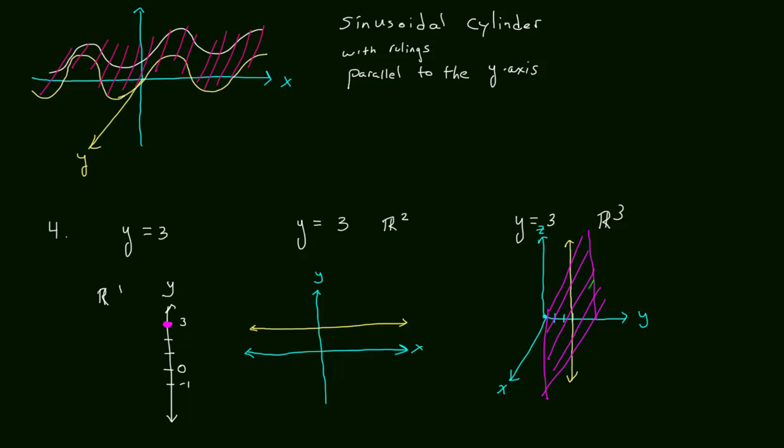We could have drawn y equals 3 like this. And then when we drew our rulings, they again would be parallel to x and also parallel to z going down. And we also have the same plane. I would prefer to call this a plane. But we can actually call it a line cylinder with rulings parallel to the x-axis.